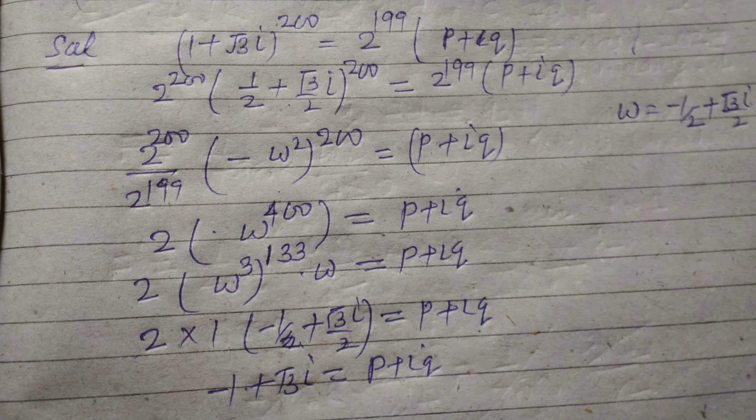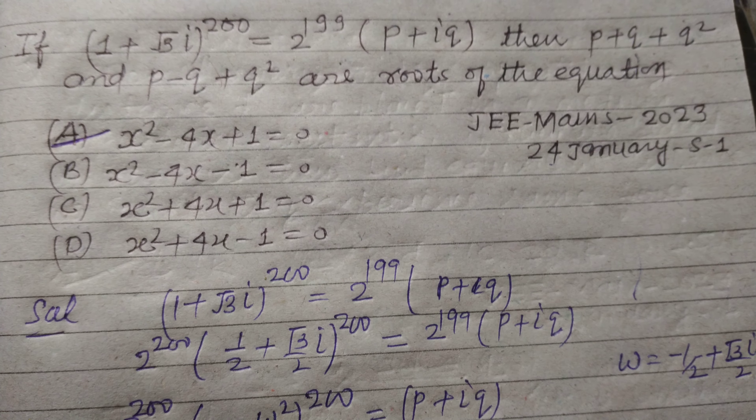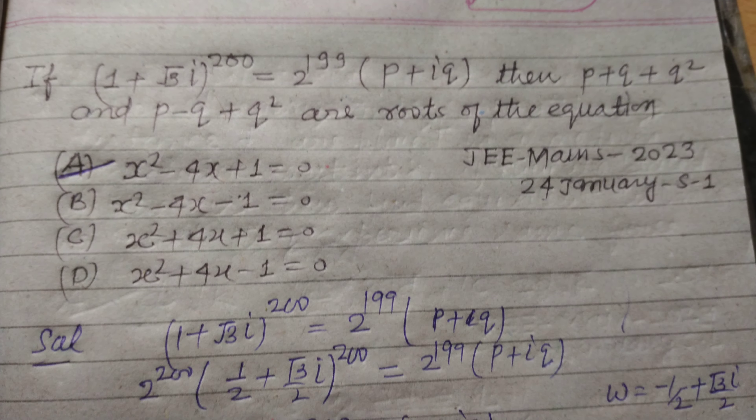The sum of roots S = (2 + √3) + (2 - √3) = 4, and the product of roots P = (2 + √3)(2 - √3) = 4 - 3 = 1. The equation is x² - Sx + P = 0, which gives x² - 4x + 1 = 0. This is option (a). I hope you got it — please like the video and subscribe to the channel, thanks!